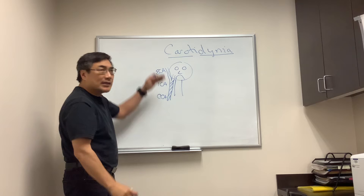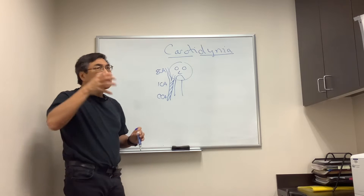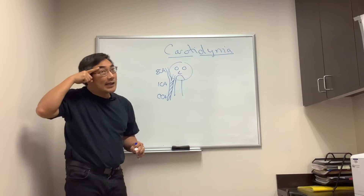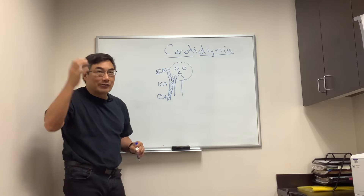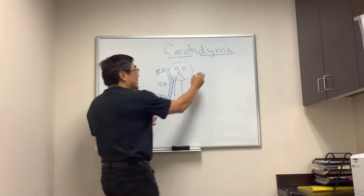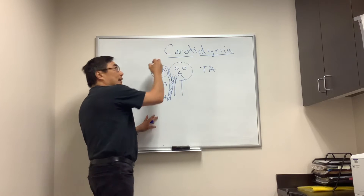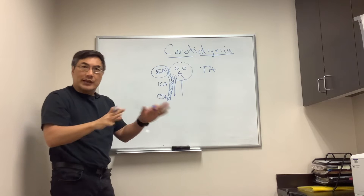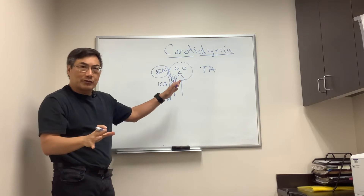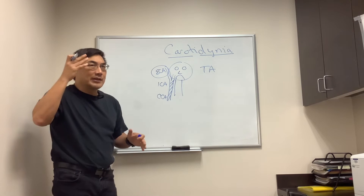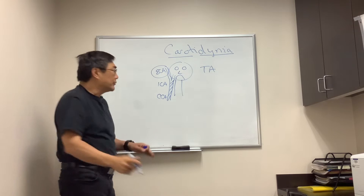You can have pain from branches of the external carotid — the one you're most familiar with is the superficial temporal artery in temporal arteritis. Because any branch of the external carotid can be involved in giant cell or temporal arteritis, the pain can be in the eye, face, ear, jaw, or any of those areas.